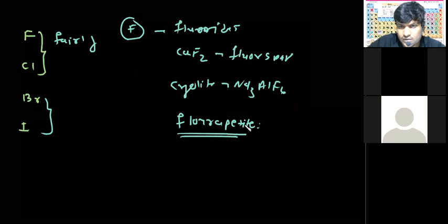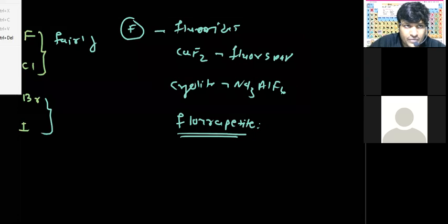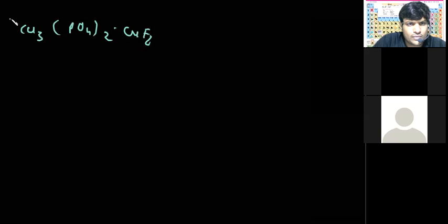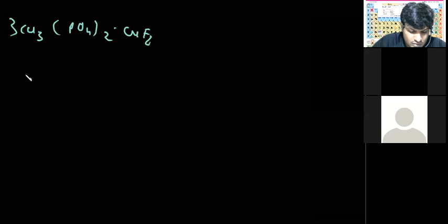It's called the fluorapatite. Yeah. Now you can click on it. Chlorine will come. Now you will think about where chlorine. What will you remember? Ca3 fluorapatite, Ca3PO4 twice into CaF2. How many times do you write? Let's read. Next one.